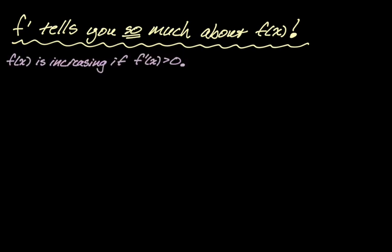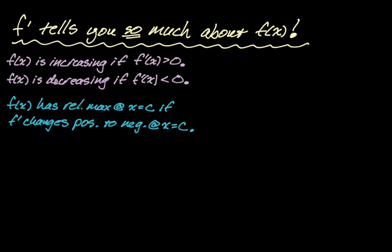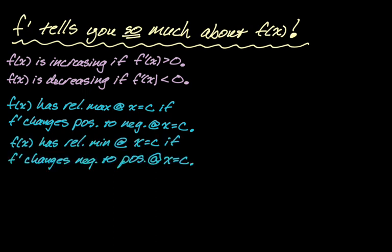First, f of x will be increasing if f prime of x is greater than zero. Similarly, f of x will be decreasing if f prime of x is less than zero. Related to these ideas, f of x has a relative maximum at x equals c if f prime changes from positive to negative at x equals c, and a relative minimum if f prime changes from negative to positive. Those two facts combined are called the first derivative test for relative extrema.